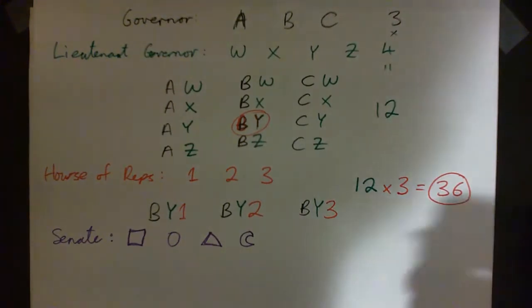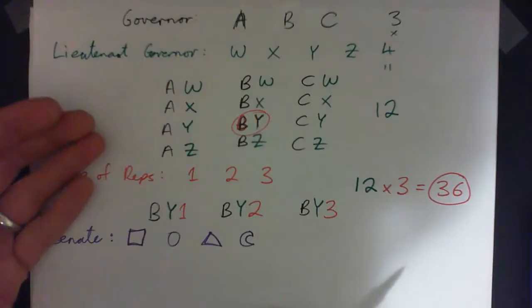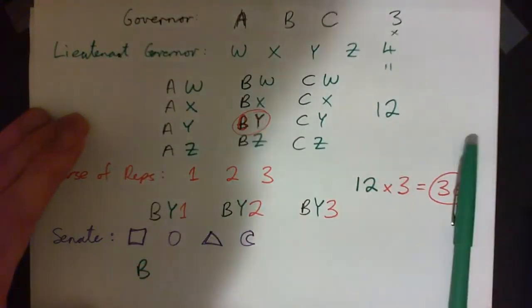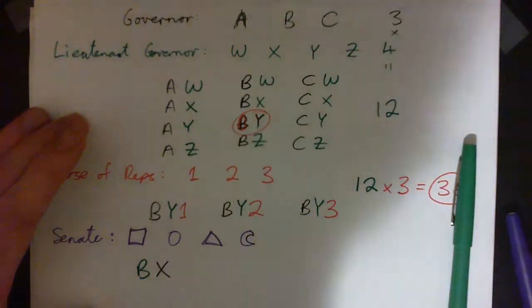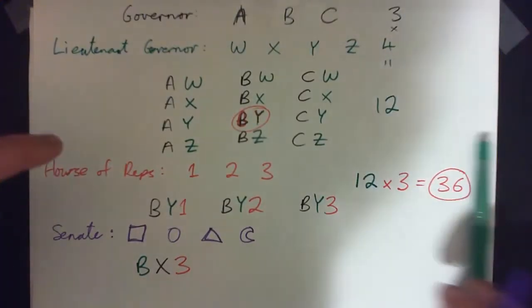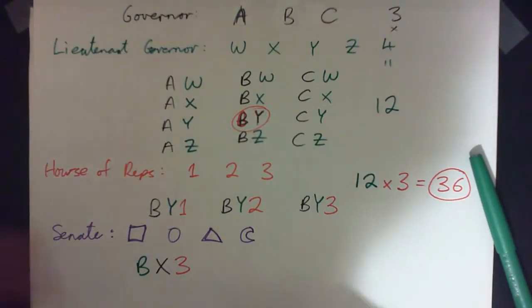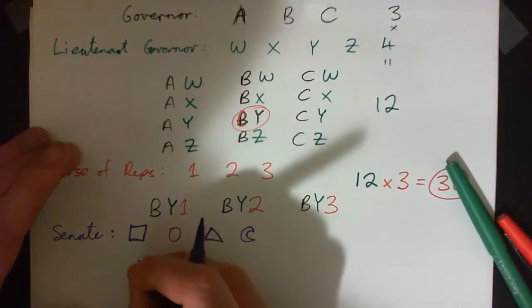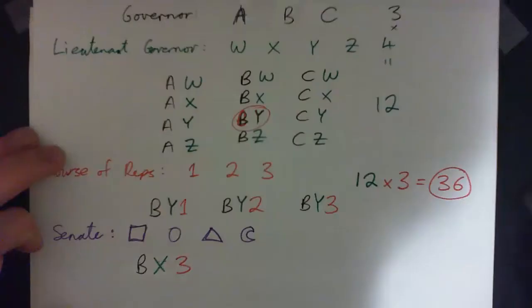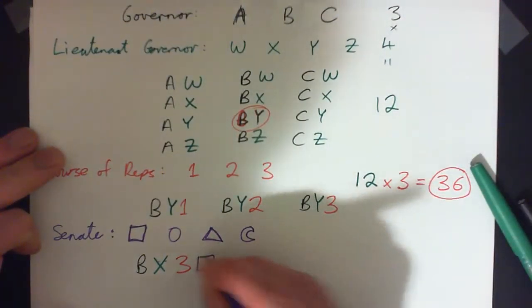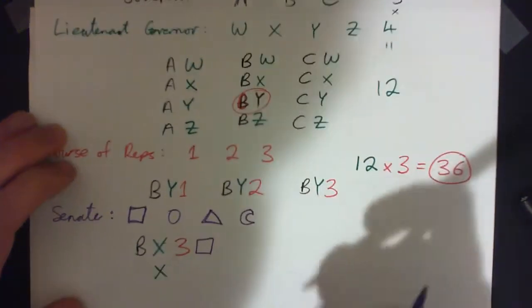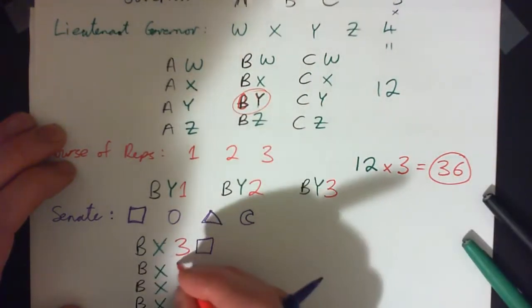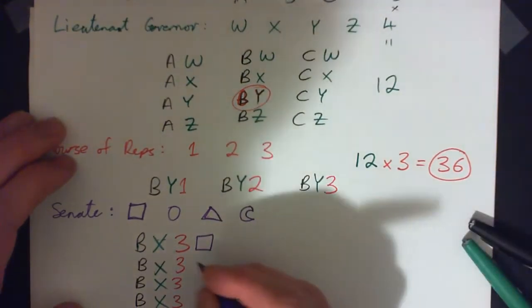So for example, we could take BY2, or CZ3, or AW1, or AZ2, or whatever. Or we could take, say, BX3. And onto BX3, BX3 square, or we could go BX3 circle, or BX3 triangle, you get the idea. I'm just trying to draw this out because I just want to make sure you guys understand this without just trying to memorize some formula. I really want to try to visualize this. Okay, so now for any combination of governor and lieutenant governor, House of Reps, I can choose, I can make four possibilities by adding on a different Senate person.